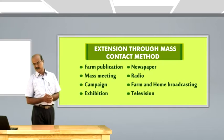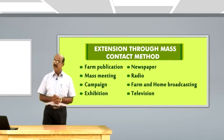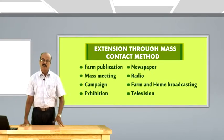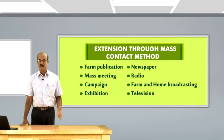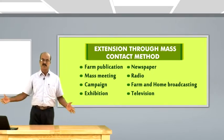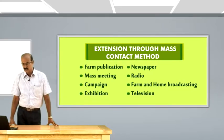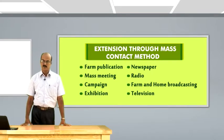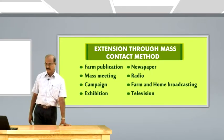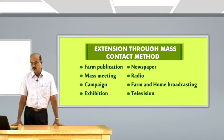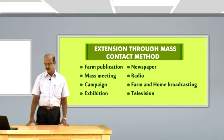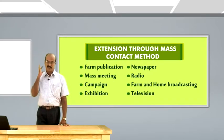The last method is mass contact. The name implies contacting individuals as a mass — above 50, maybe 100 or more, depending on the size of the audience. A large population is contacted at the shortest span of time through different modes like farm publications, mass meetings, campaigns, exhibitions, newspapers, radio, farm and home broadcasting, and television.